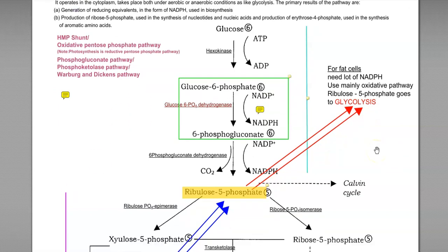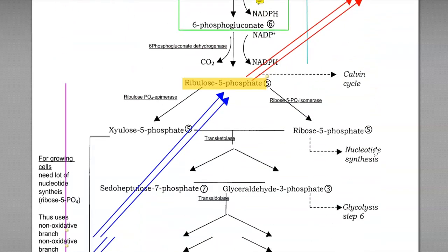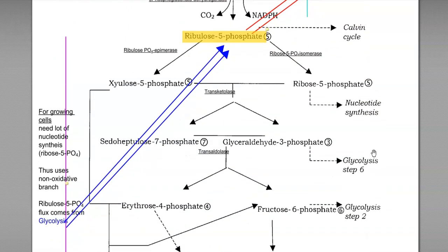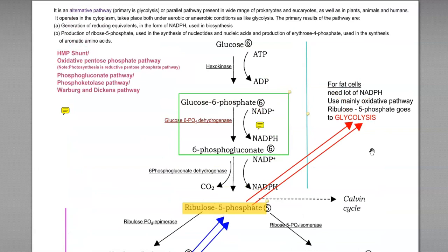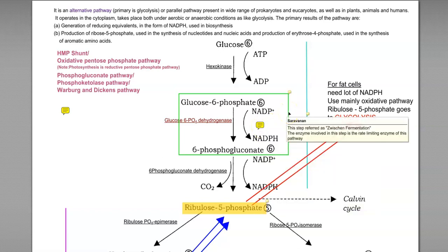The total pathway is divided into two halves. The first half is the oxidative pathway, in which the final product ribulose 5-phosphate is produced. The other half is the non-oxidative branch of the pentose phosphate pathway. In the oxidative pathway, glucose is first converted to glucose 6-phosphate by the enzyme hexokinase. In the next step it is converted to 6-phosphogluconate by glucose 6-phosphate dehydrogenase. This conversion of glucose 6-phosphate to 6-phosphogluconate is referred to as cysteine fermentation, and the enzyme involved is a limiting enzyme in living systems.